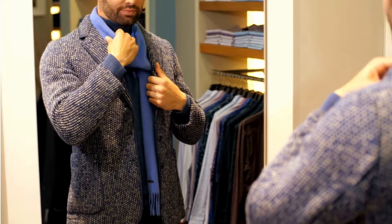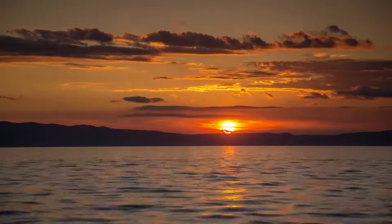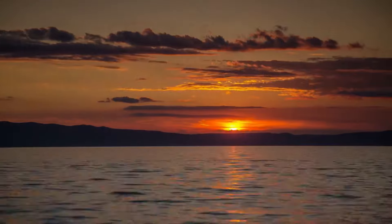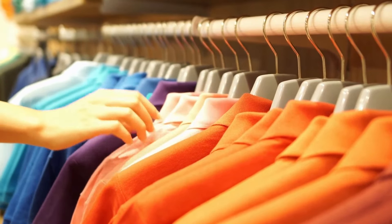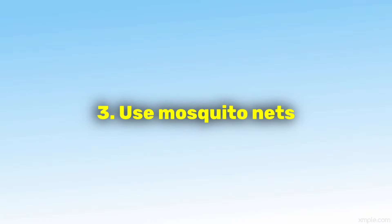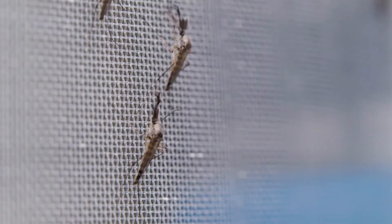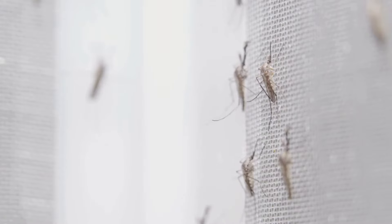Wear protective clothing. Wear long sleeves, pants, and socks when outdoors, particularly during dawn and dusk when mosquitoes are most active. Choose light-colored clothing, as mosquitoes are attracted to dark colors. Use mosquito nets — sleep under a mosquito net, especially if you're in an area where mosquito-borne diseases are prevalent. Ensure the netting is properly installed and tucked under the mattress to prevent mosquitoes from entering.